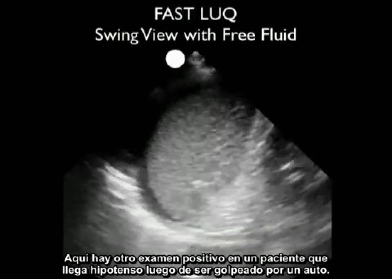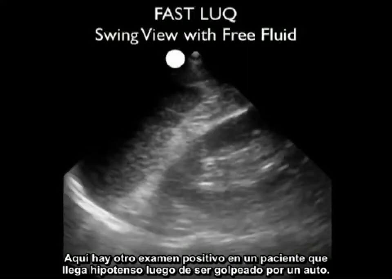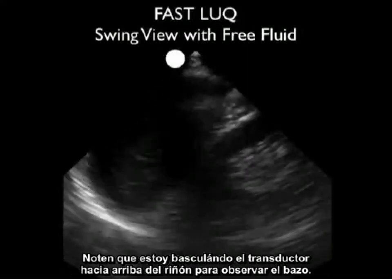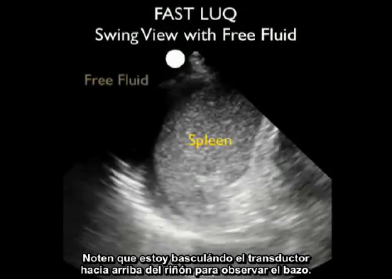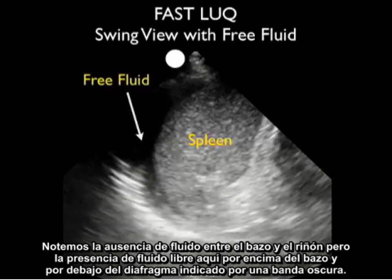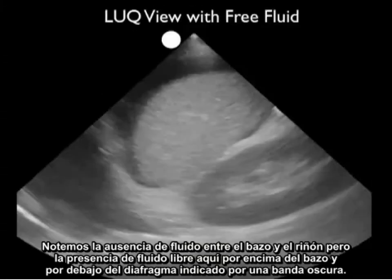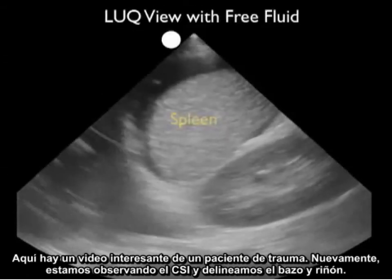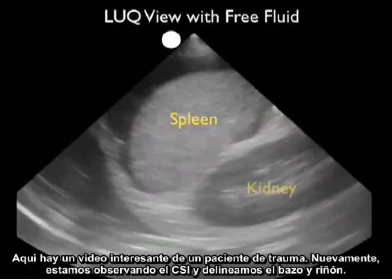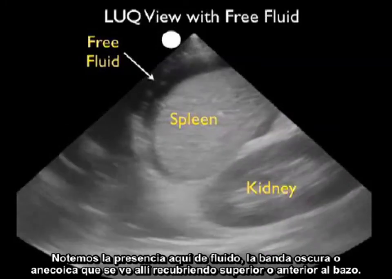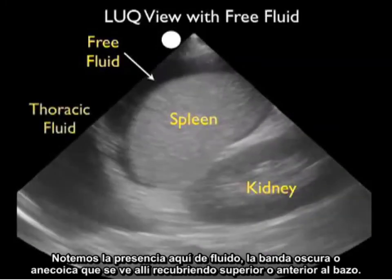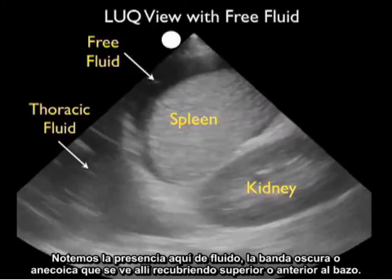Here's another positive examination in a patient who comes in hypotensive after being hit by a car. I'm swinging the probe between the kidney up superiorly to look at the spleen. Notice the absence of fluid between the spleen and the kidney, but the presence of free fluid right above the spleen and below the diaphragm, indicated by that dark stripe. Again we delineate the spleen and kidney and see a dark or anechoic fluid stripe layering out superior and anterior to the spleen.